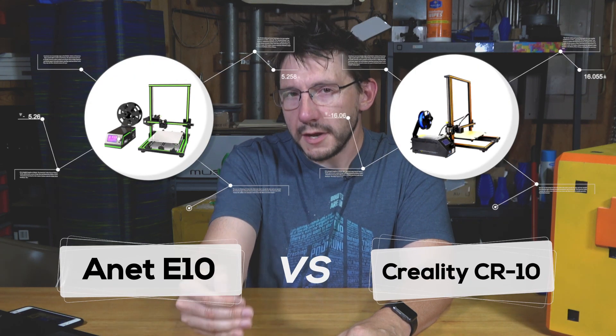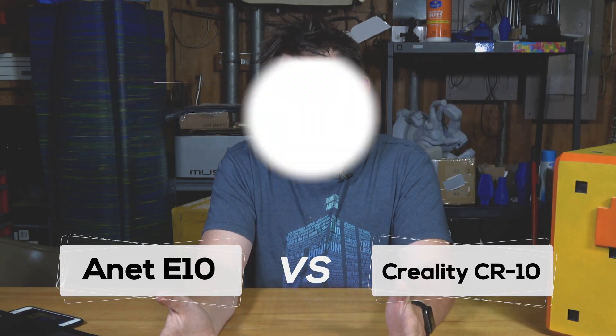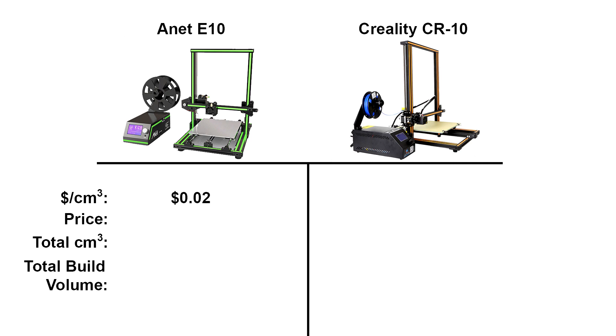A lot of resellers have asked us to compare the Anet E10 3D printer with the CR10 3D printer. The CR10 from Creality was an amazingly popular offering. The Anet E10 is two cents per cubic centimeter of build volume, whereas the Creality CR10 is a penny per cubic centimeter of build volume. The CR10 is $123 more than the E10.